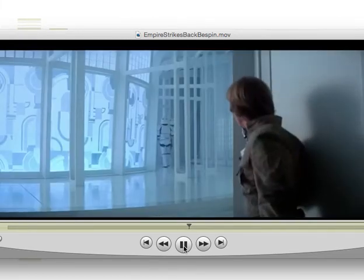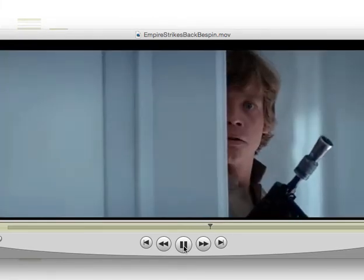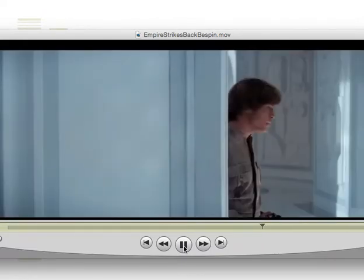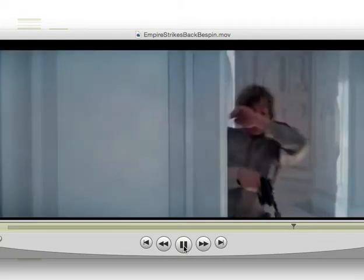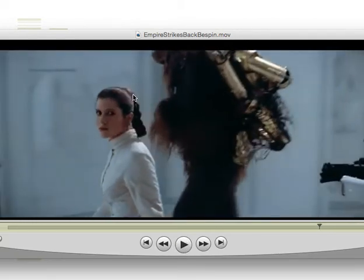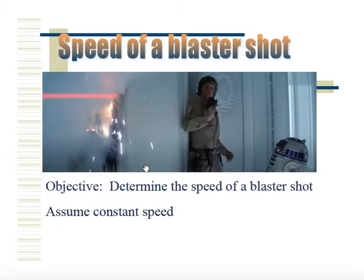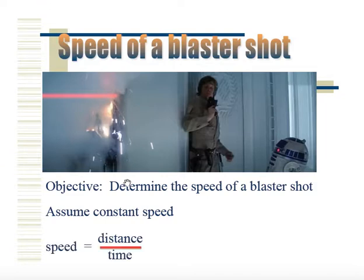Good morning. Our goal today is to investigate the physics of a Star Wars blaster shot — specifically the speed of a blaster shot. We will assume constant speed, which is reasonable because bullets travel at constant speed when initially fired. As a result, we're able to use the formula: speed equals distance over time.